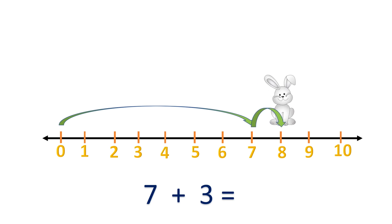One, two, three. Seven add three equals ten.